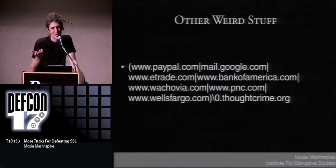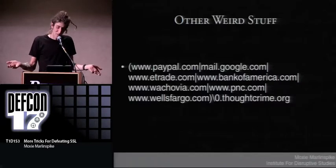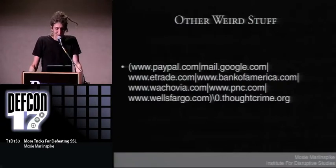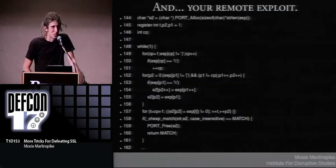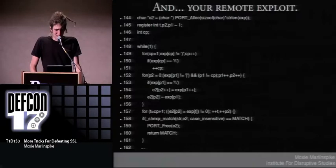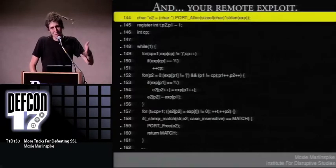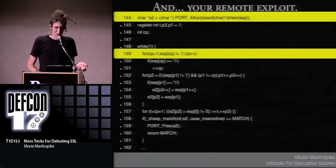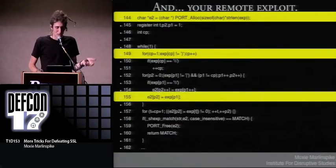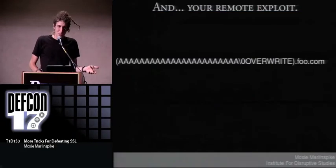A certificate for star[null].thoughtcrime.org will match any domain — this is actually better than having a CA cert, because with a CA cert you have to create and sign another certificate. With this wildcard cert, you just hand the same thing to everyone and it matches everything. There's also other weird stuff in the NSS wildcard matching code: if you don't want to use a null character, you can get star~.thoughtcrime.org, which also works. It supports grouping, which is strange. So you could get paypal.com, or mail.google.com, or etrade.com, or bankofamerica.com[null].com — just paying for one certificate.